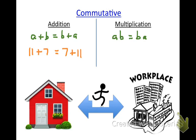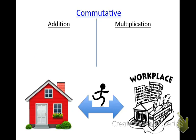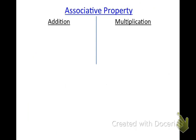The associative property is the one people confuse with commutative because they both deal with the order of adding and multiplying. The difference is how many things are involved. With the commutative property, there are always two numbers — you're changing the order of adding or multiplying two things. With the associative property, you're working with three numbers, and the question is: when you add or multiply three numbers, which two do you combine first? The answer is it doesn't matter.